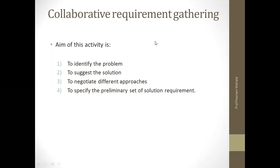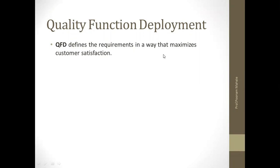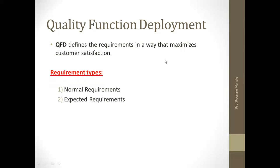The next activity of requirement elicitation is quality function deployment, also known as QFD. QFD is a deployment technique that translates the customer needs into technical requirements. Customers are not always technical experts, so their requirements may be in natural language form and need to be converted into technical requirements. QFD defines the requirement in a way that maximizes customer satisfaction. Quality function deployment includes three types of requirements: normal requirement, expected requirement, and exciting requirement.